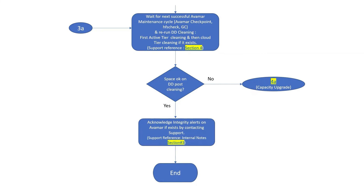The reason to rerun is that earlier the maintenance cycle was failing. So if there were any backups that expired manually or met retention, that has not been communicated to DD yet. DD has no information since the time the earlier maintenance was failing. DD only receives this information once Avamar maintenance is done. So wait for a successful Avamar maintenance, which is scheduled to run every day in the morning on Avamar, and that includes the Avamar checkpoint, HFS check, and GC. Once done, rerun DD cleaning.